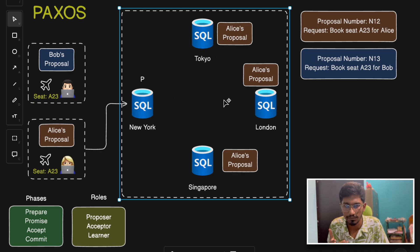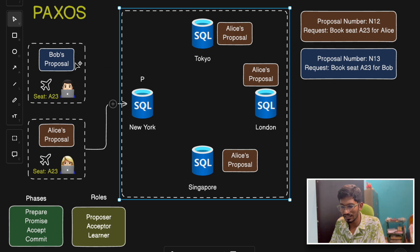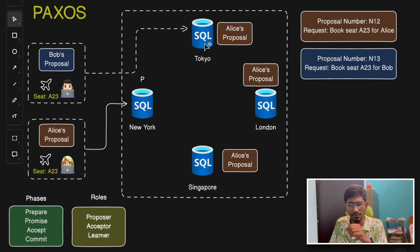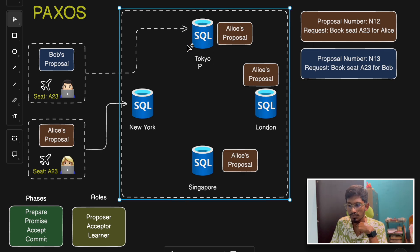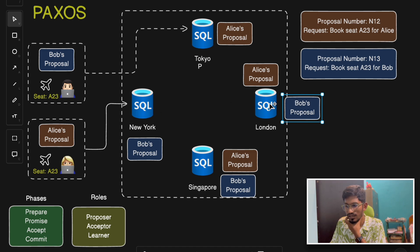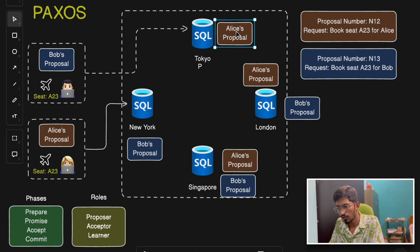Now in the accept phase, the proposer sends an accept request to all acceptor nodes. But at the same time, Bob's request to book the same seat arrives at the Tokyo database node, which becomes the proposer for Bob. Tokyo sends its own proposal to the other acceptor nodes — London, Singapore, and New York. Now London and Singapore each have two proposals: LS's proposal N12 and Bob's proposal N13.